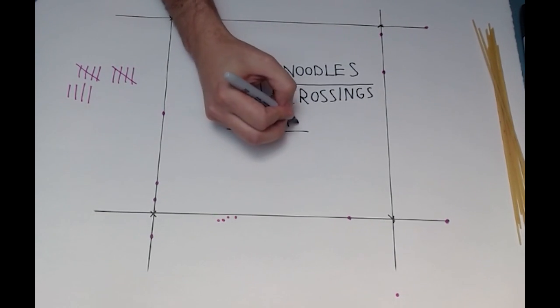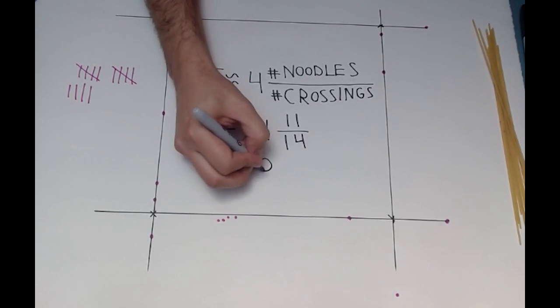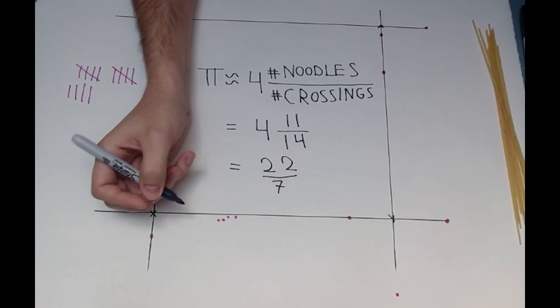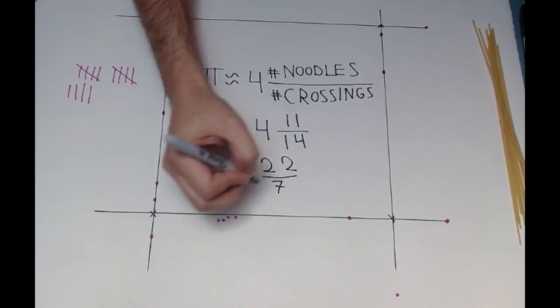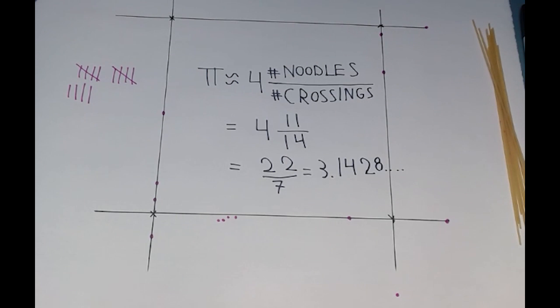In my case, I threw 11 noodles and I got 14 crossings, so my estimate for pi works out to 22 over 7, or as decimals, 3.1428.